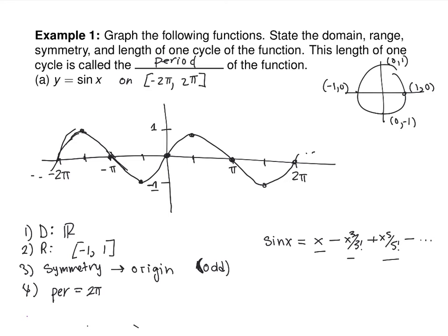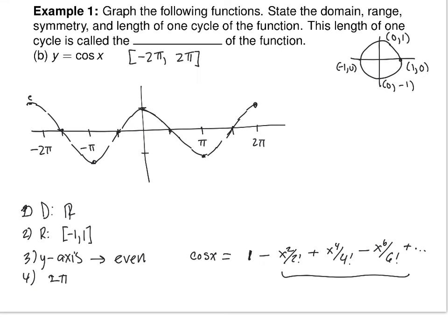If you take this sine function and shift it up, you're going to lose the symmetry. If you shift it left or right, you'll keep the symmetry if you shift it the right amount. With this cosine function, what happens if you shift it up? Does it lose its evenness? It doesn't, because it keeps that symmetry along the y-axis. So you can shift even functions up and keep their symmetry, but you can't shift odd functions up and keep their symmetry.